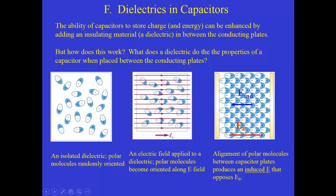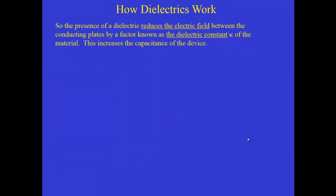So when you have an empty capacitor, the electric field inside would be E0. But when there's a dielectric, this induced field opposes it and therefore the net field is less than E0. And so the presence of a dielectric reduces the electric field that would otherwise be present in between the capacitor plates.